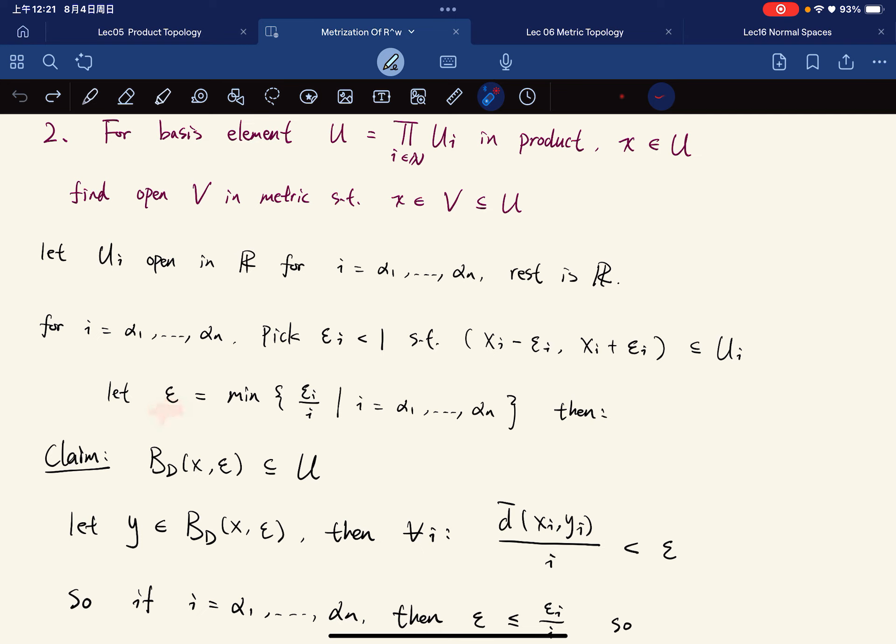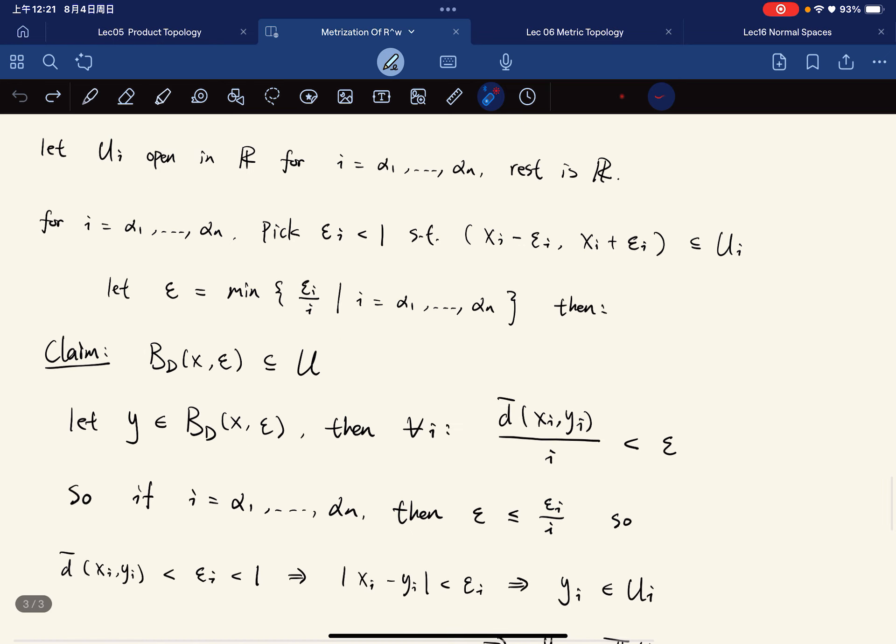Let ε be the minimum of εᵢ divided by i, for all such i. Okay, with this ε being defined, what we're going to see is that we have, for this ε, the ball Bᵨ(x, ε) is contained in U.